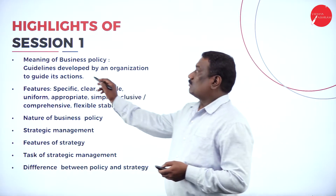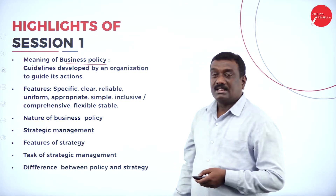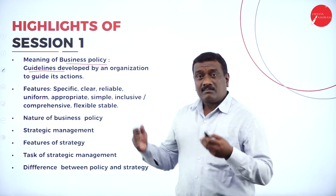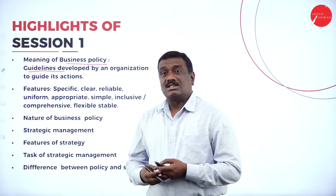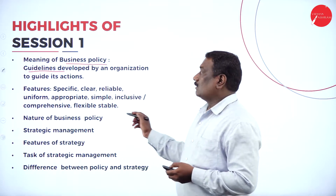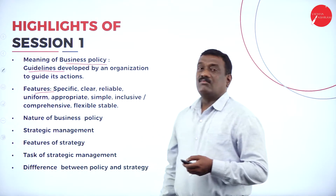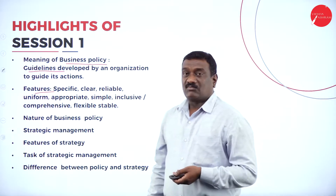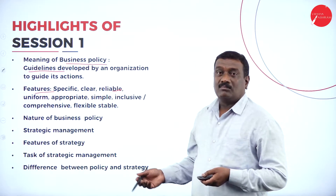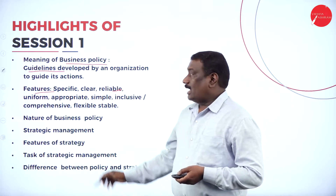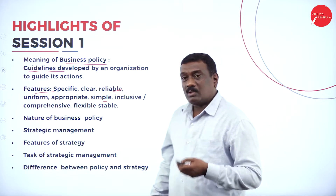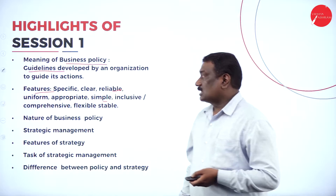I explained to you about the business policy — that is, the meaning of business policy. It says it is a guideline which has been developed by the organization in order to put that into action. I also explained to you about the features: it should be specific, it should be clear, then it should be reliable, it should be uniform as well as appropriate and simple, and it should be comprehensive as well as flexible or stable.